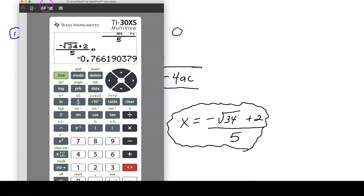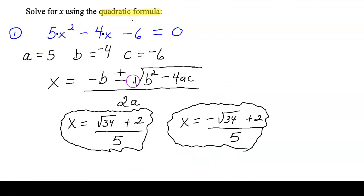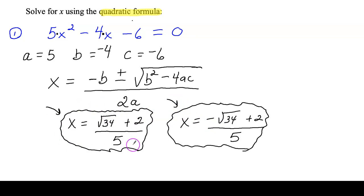That's how you use the GED math calculator to approach quadratic formula problems without punching everything in by hand. When you solve this equation for x, these are your two solutions written in radical form — they look nearly identical, with the second one just having a negative sign in front. Hit the toggle button to convert either solution to a decimal. Thanks for watching, and have a great day.